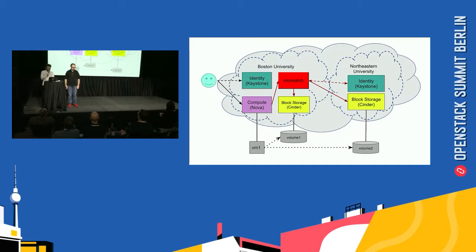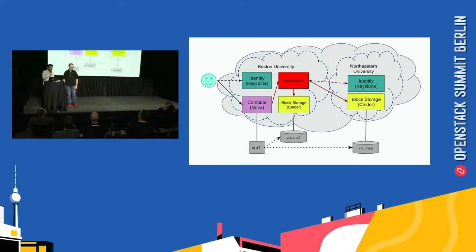The user comes in and makes a request for Nova to attach Volume 2. Nova makes an API call to whatever service is registered in the service catalog as Cinder. The service catalog will contain the entry for Mix and Match instead of Cinder.